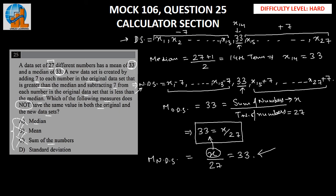Therefore option D is the correct answer. In the new data set, all the terms will be farther from the median — both the terms less than the median and those greater than the median — so the standard deviation (spread) changes. Hence option D is the correct answer.